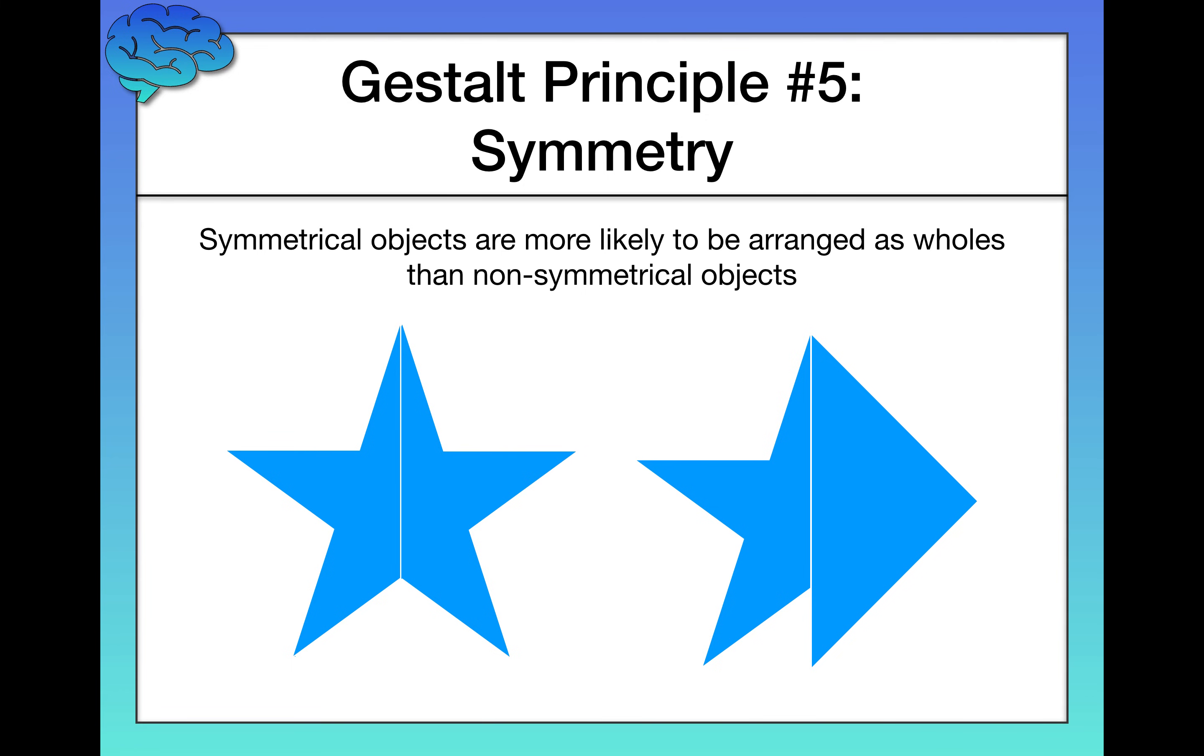Next, we have symmetry. Symmetrical objects are more likely to be arranged as wholes rather than non-symmetrical objects. On the left, you would probably say that this looks like one object, even though there is a gap in between them and technically it's two separate objects.